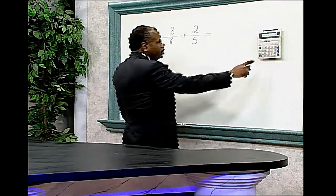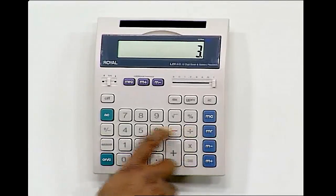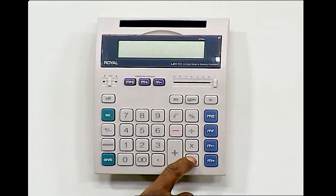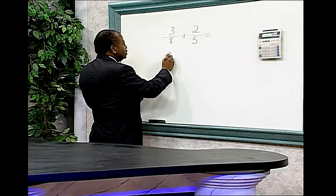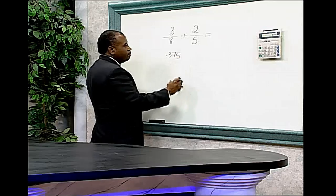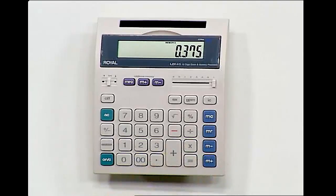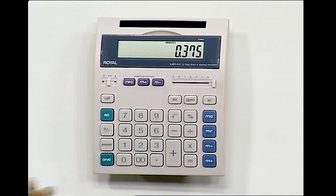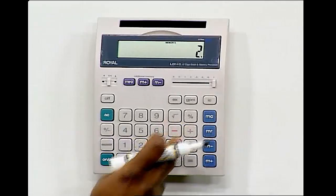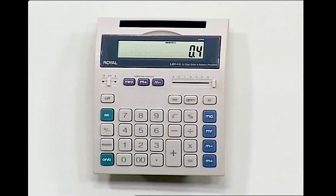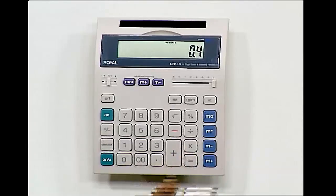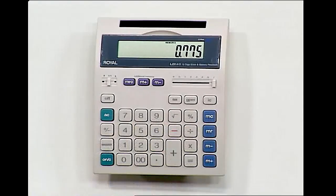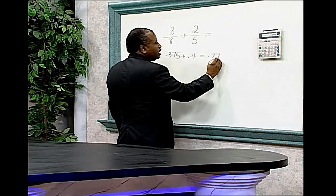3 divided by 8 is equal to 0.375. Memory plus. 2 divided by 5 is equal to 0.4. Memory plus. Memory recall is equal to 0.775.